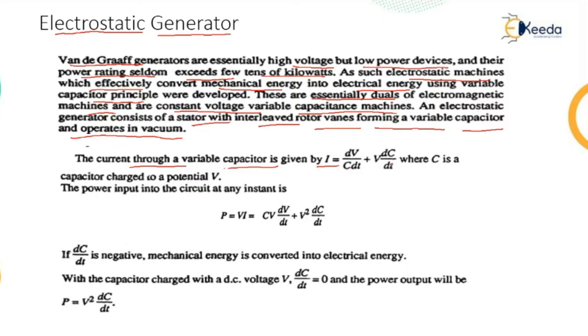This current equation is derived by differentiating Q equals CV. So i equals 1/C times dV/dt plus V times dC/dt, where C is the capacitor charged to a potential V.